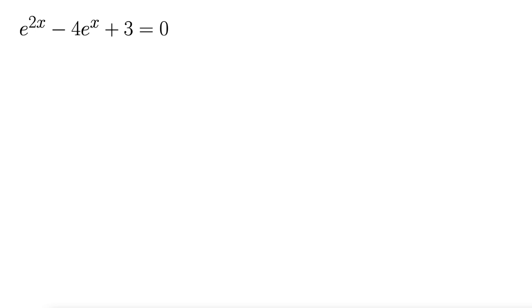This example looks a little strange. We have e^(2x) - 4e^x + 3 = 0. Unless you recognize the technique for solving these kinds of equations, they can be really baffling.